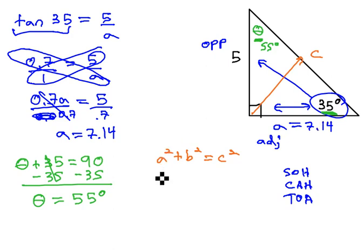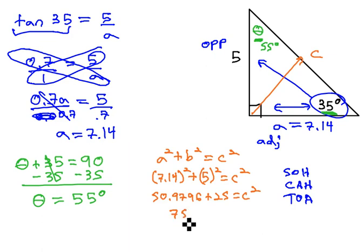So A is 7.14 squared plus B is 5 squared equals C squared. And our calculator says 7.14 squared is 50.9796 plus 25 equals C squared. Adding them together, we get 75.9796 equals C squared. And taking the square root of both sides, we find that C, the last side, is 8.72 after rounding.